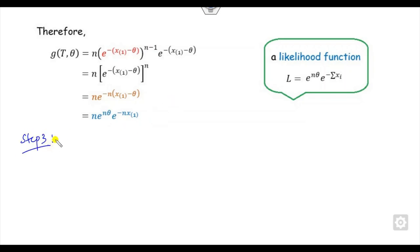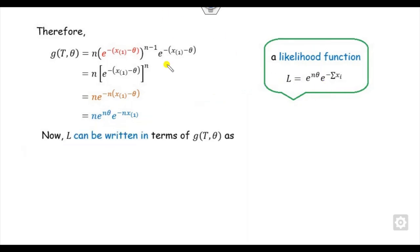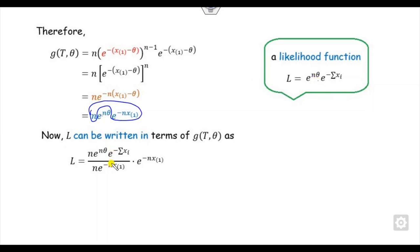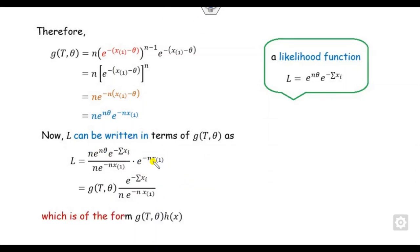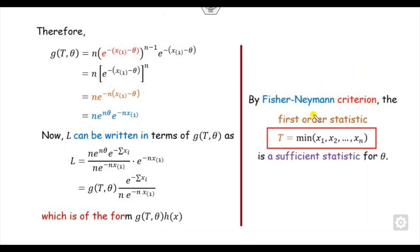Step 3: express L in terms of the PDF of x_(1). Multiplying and dividing the appropriate parts into L, we identify g(t, theta) as the PDF of x_(1) and h(x) as the remaining part that is totally independent of theta. Since L can be written in this form, by the Fisher-Newman criteria, T = x_(1) = min(x_1, ..., x_n) is the sufficient estimator for theta.